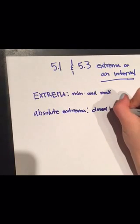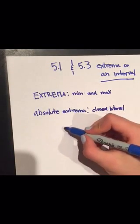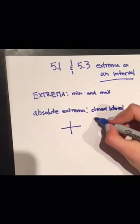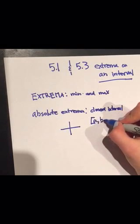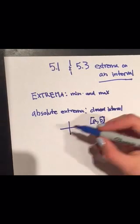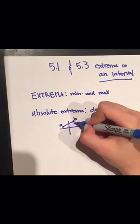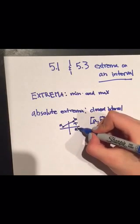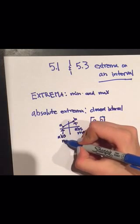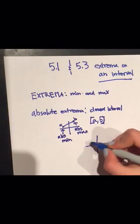Absolute extrema must be on a closed interval. An absolute maximum is simply the highest point on the interval, and the absolute minimum is simply the lowest point on the interval. They can occur anywhere on the interval, including the endpoints, as long as the endpoints are included in the interval.